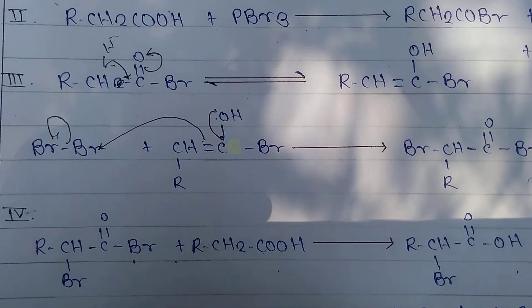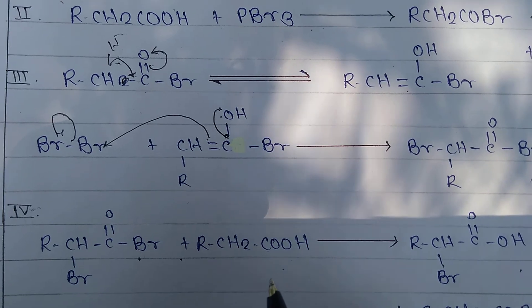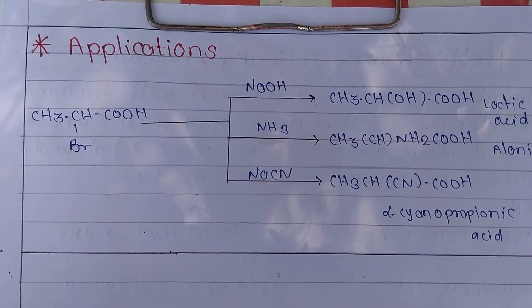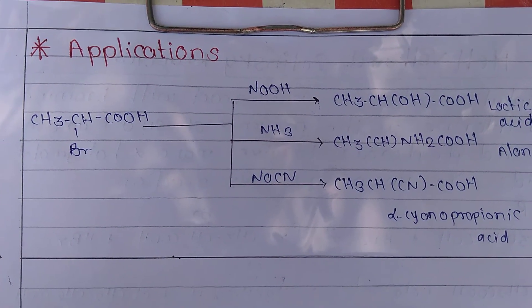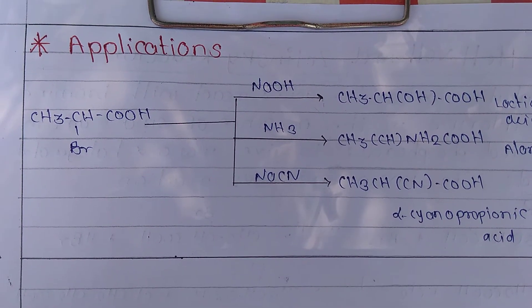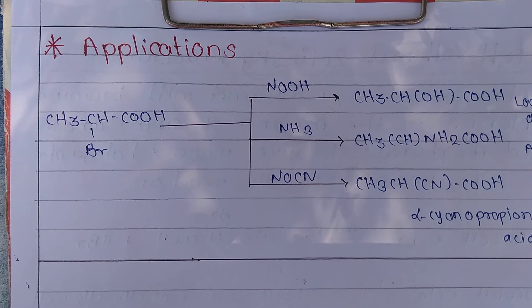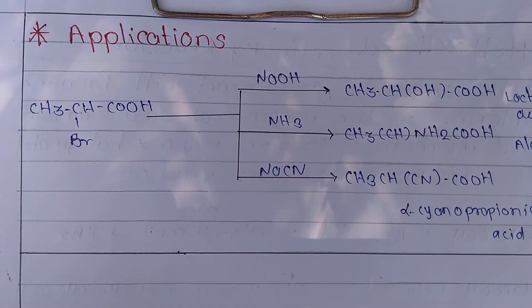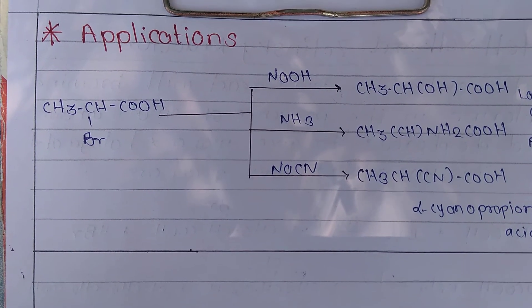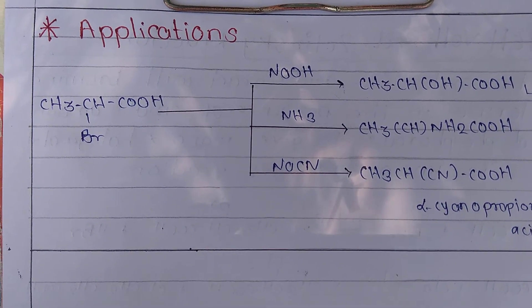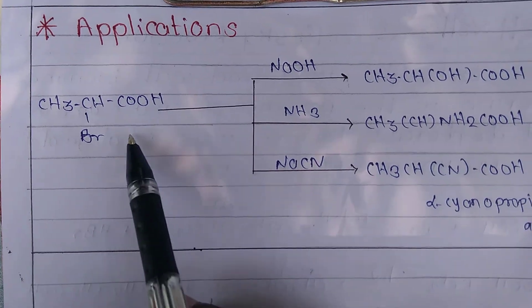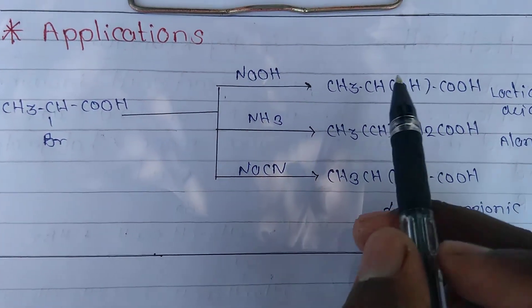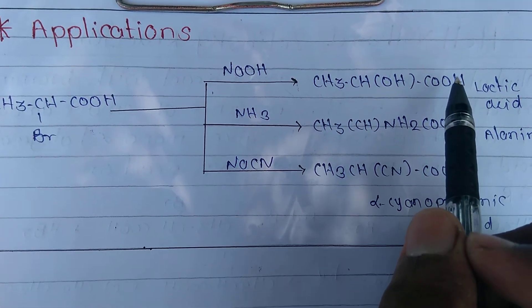Now let's discuss the applications of the Hell-Volhard-Zelinski reaction. The product — the alpha-halogenated acid — is easily replaced by nucleophilic reagents to give various useful substituted products, like alpha-amino acids and alpha-hydroxy acids, which have biochemical significance.